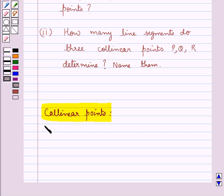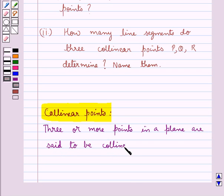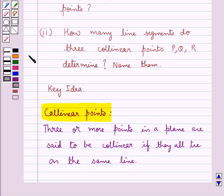Three or more points in a plane are said to be collinear if they all lie on the same line. This is the key idea to be used in this question.